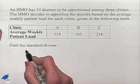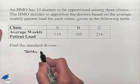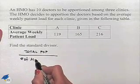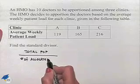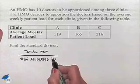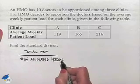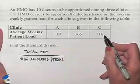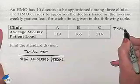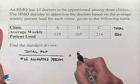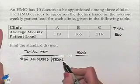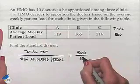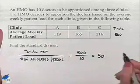The standard divisor is going to be the total population divided by the number of allocated items. In this problem, we're going to add up 119 plus 165 plus 216, which gives us a total of 500. We're going to take that value and divide by the number of allocated items — in this case, we're apportioning 10 doctors — so we divide by 10 to give us our standard divisor of 50.